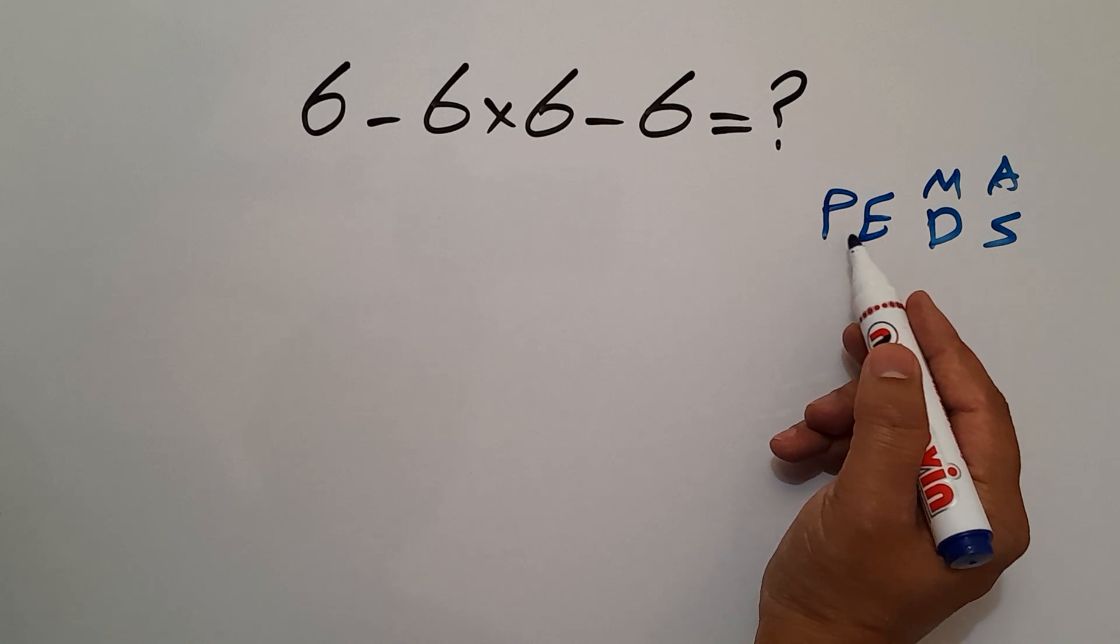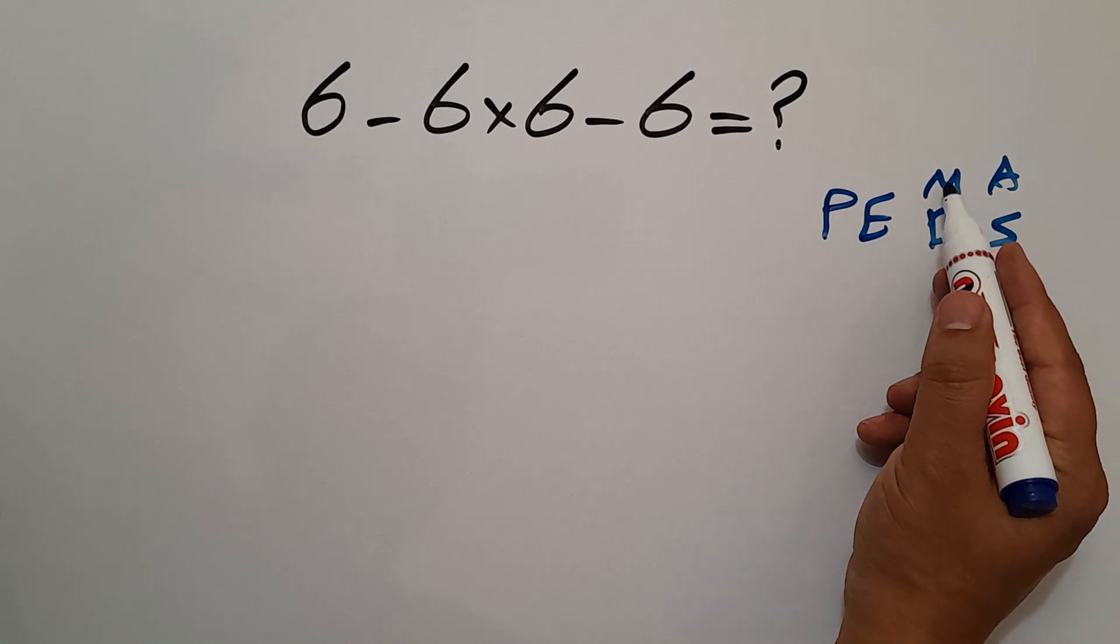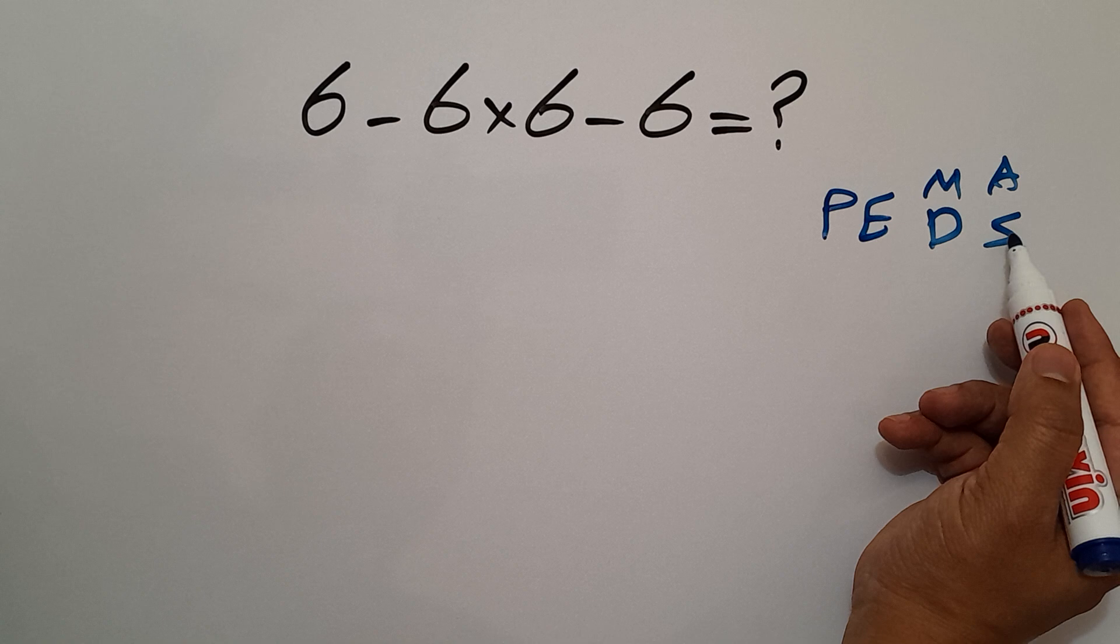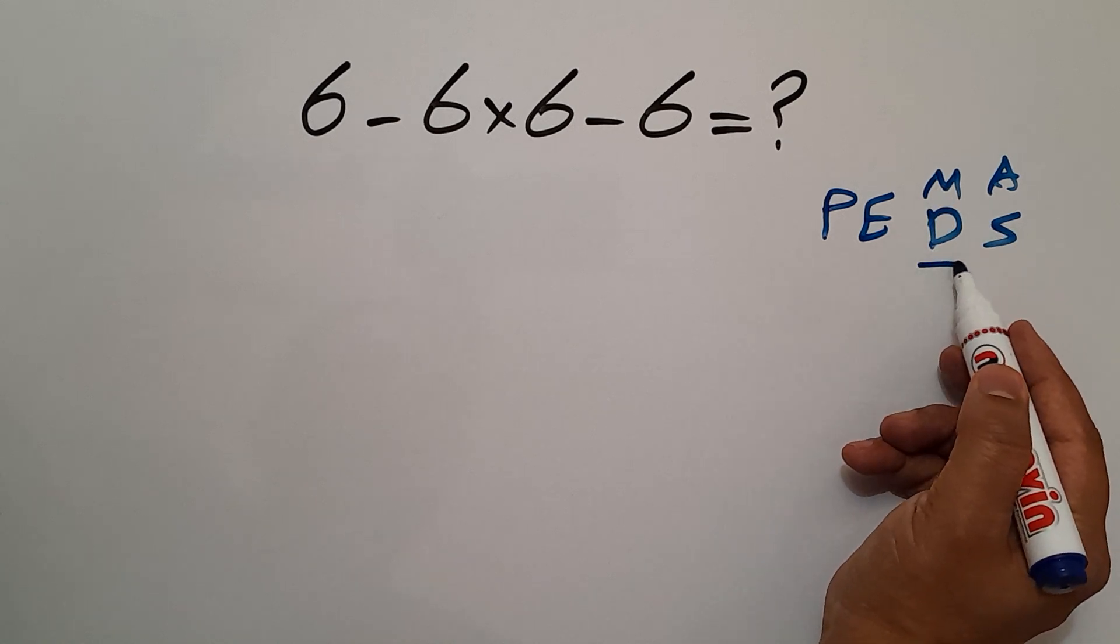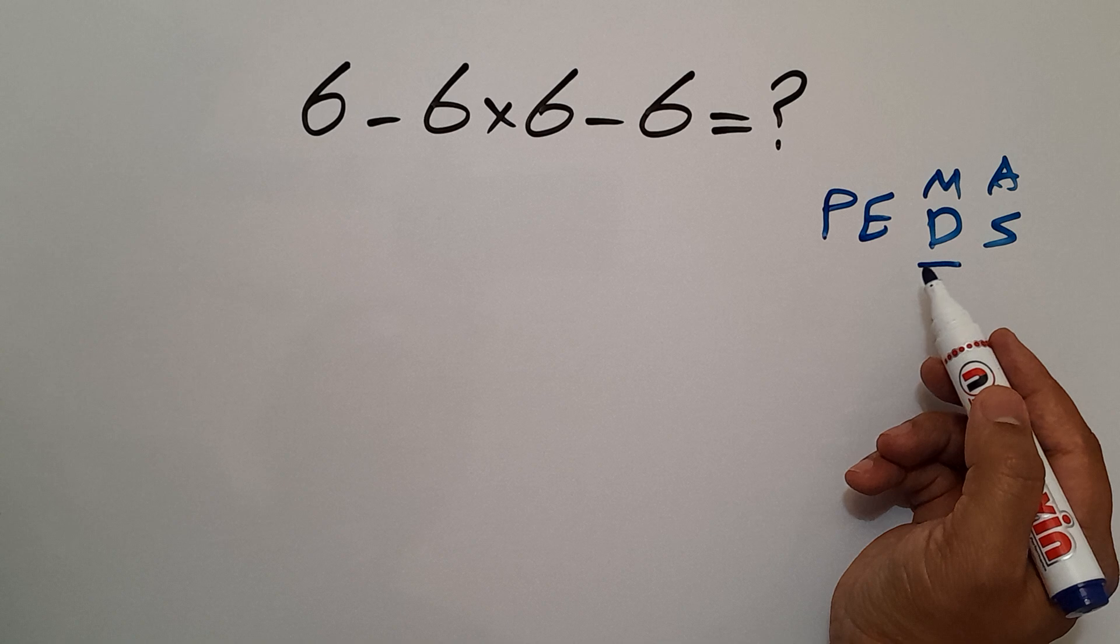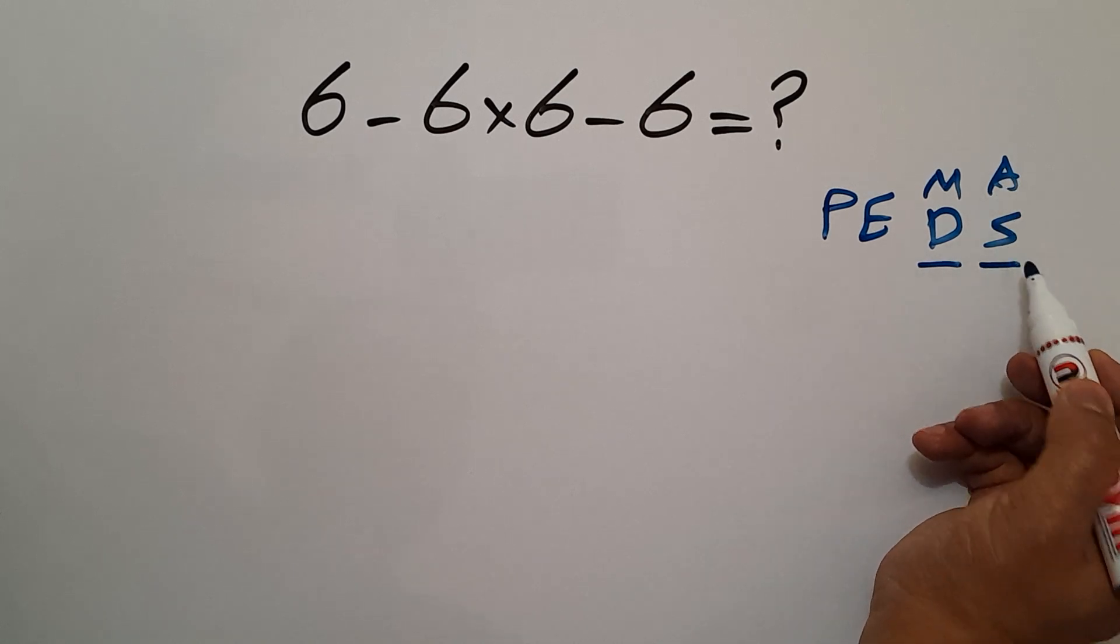We first do parentheses, then exponents, then multiplication or division, and finally addition or subtraction. Remember that multiplication and division have equal priority and we have to work from left to right. And the same applies to addition and subtraction.